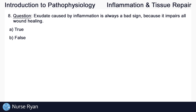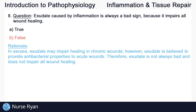For the last question of this quiz, number eight: exudate caused by inflammation is always a bad sign because it impairs all wound healing. The answer here is B, false. In excess, exudate may impair healing in chronic wounds. However, exudate is believed to provide antibacterial properties to acute wounds. Therefore, exudate is not always bad and does not impair all wound healing.